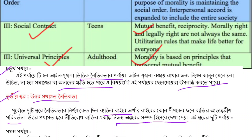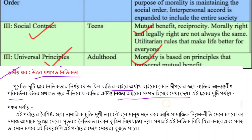Stage 5 is the social contract orientation. At this stage, people understand that social rules and laws are social contracts made for the benefit of all. Humans follow morality not just because of rules but because of a shared social agreement. Society's moral norms are established for the collective good, and all individuals are expected to uphold them.